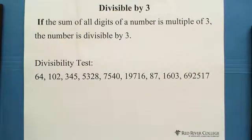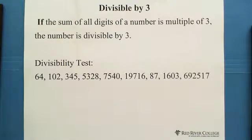A number is divisible by 3 if the sum of all digits of the number is a multiple of 3.